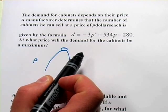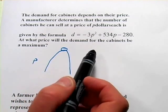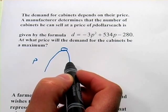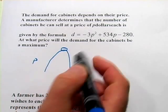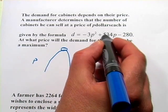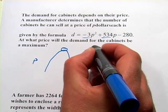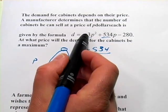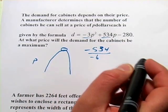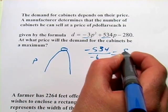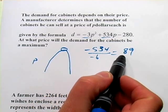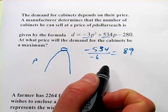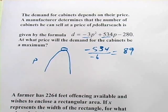All we really need to do is find the p value for the vertex of this function. It's negative b over 2a, so negative 534 over 2 times negative 3, that's negative 6, and if you do the division you get 89. So the price that maximizes this function is $89.